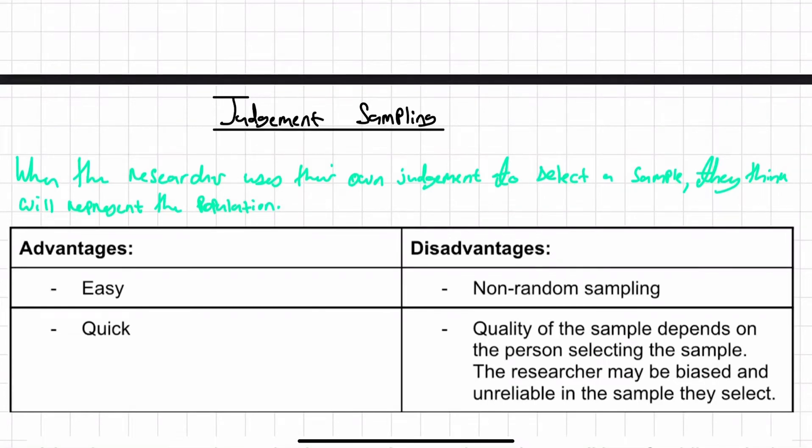Judgment sampling is the method that most students forget because it's just crap in my opinion. This is not a good sampling method to me. This is when the researcher uses their own judgment to select the sample they think will represent the population. I guess it can be good, but if you get like a crap researcher...